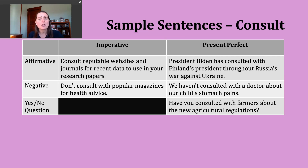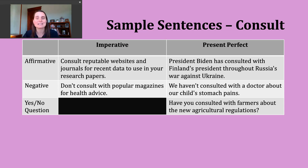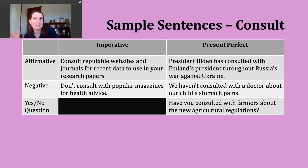Here's a negative example: 'We haven't consulted with a doctor about our child's stomach pains.' So we haven't gone to an expert yet. Finally, for a yes-or-no question in the present perfect, start with 'have' or 'has' — whichever matches your subject — then the subject, then the participle form of the verb. Example: 'Have you consulted with farmers about the new agricultural regulations?' This is similar to asking politicians whether they've talked to field experts — have you sought out their wisdom and knowledge before making laws in that area, or did you just decide without real expertise?